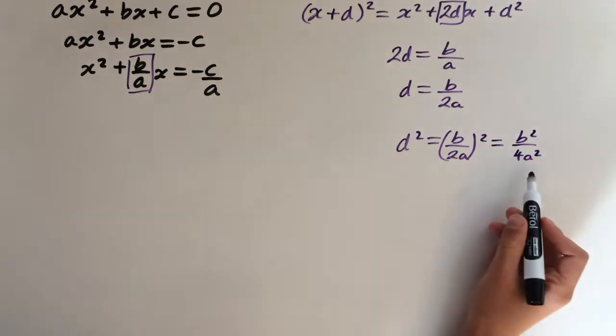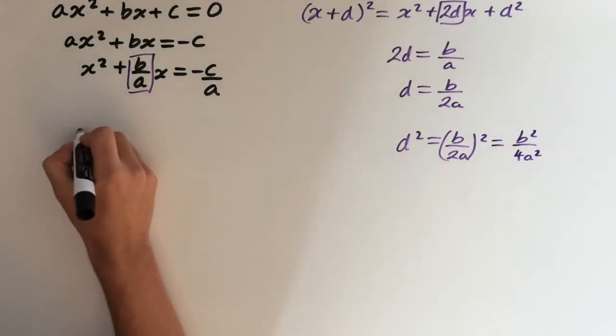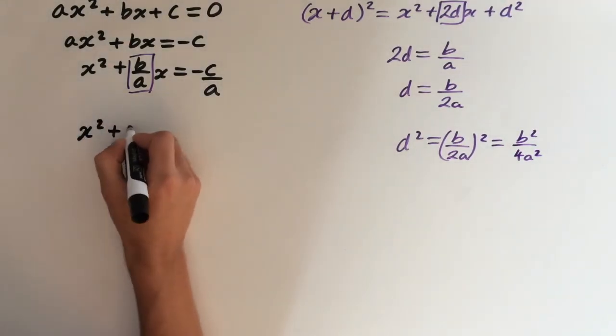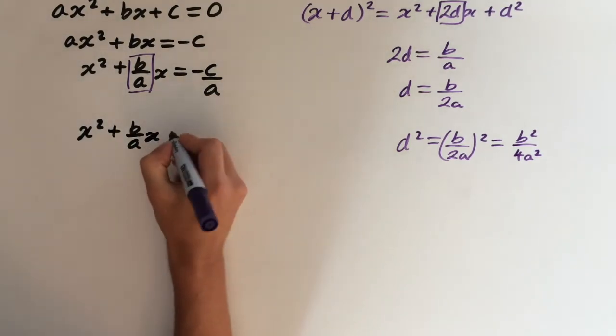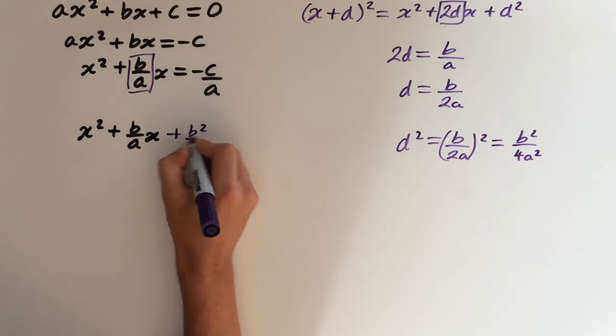So now we need to add that to both sides. So we get x² plus b over a x, plus b² over 4a².